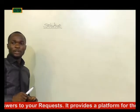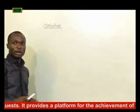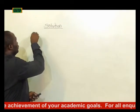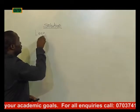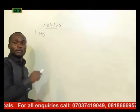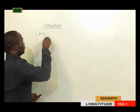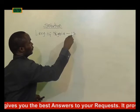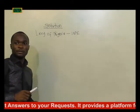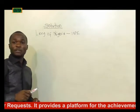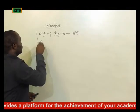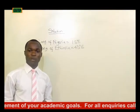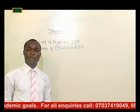Step one is to locate the places involved. From the question, the two places are Nigeria and Ethiopia. The longitude of Nigeria is 15 degrees east, and the longitude of Ethiopia is 45 degrees east. We have successfully identified the two places involved.